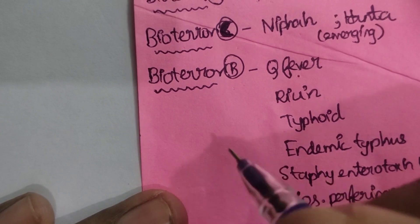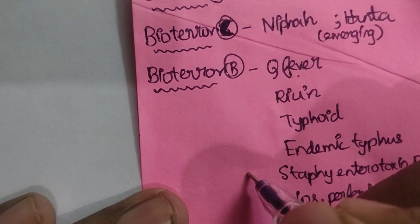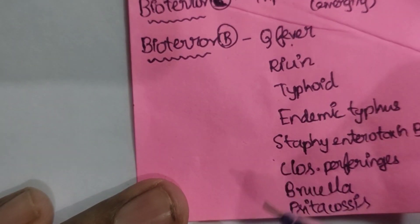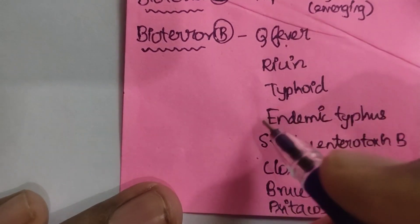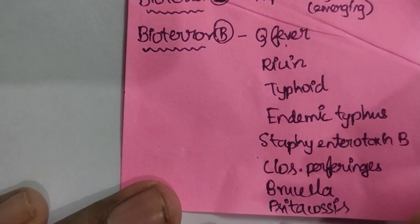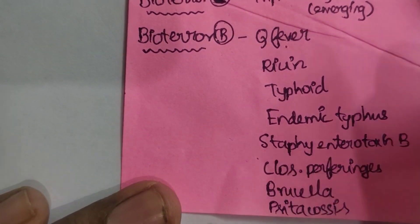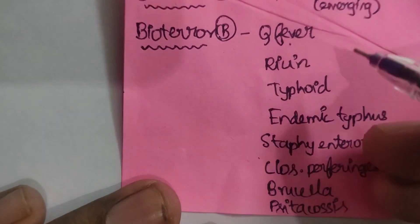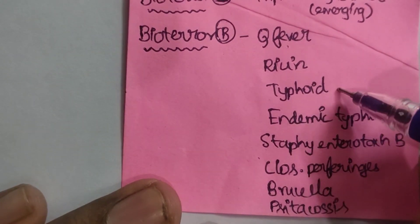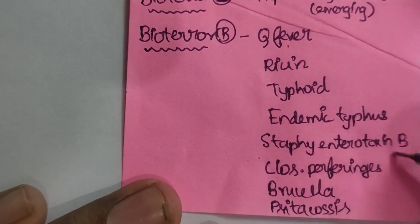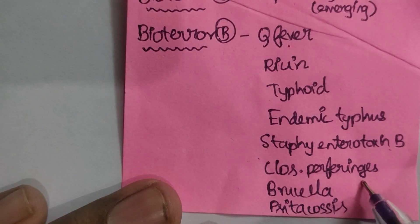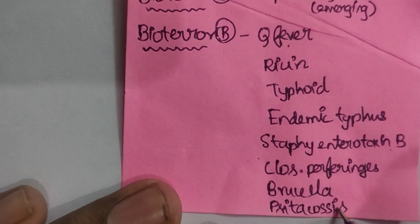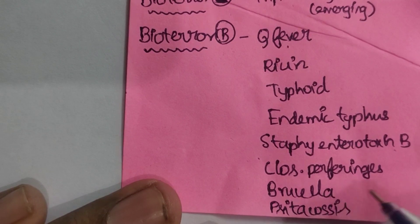Bioterrorism Category B agents are moderately to heavily spreadable, resulting in moderate illness and low death rates. Hence, it requires an enhancement of diagnostic capacity and enhanced disease monitoring. These are not the most potential threat, but we have to improve healthcare facilities in order to manage these conditions.